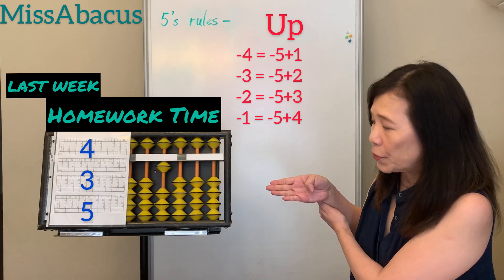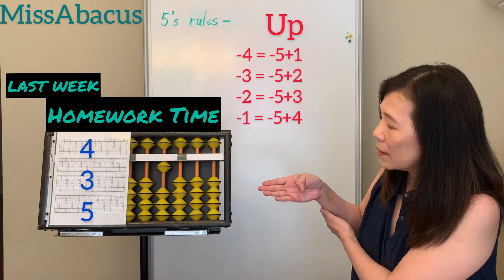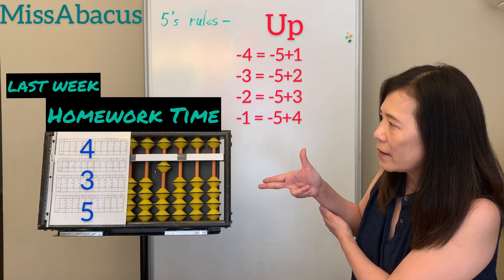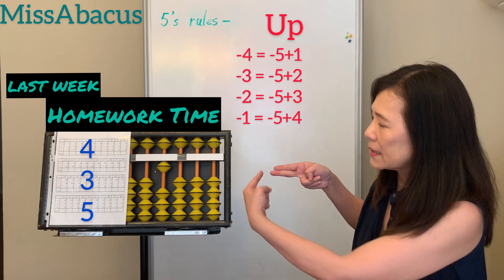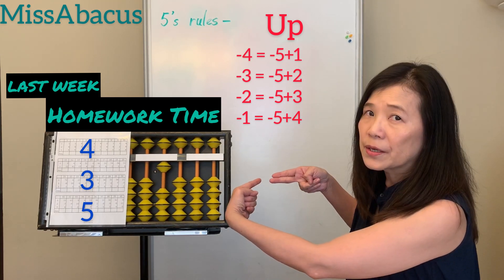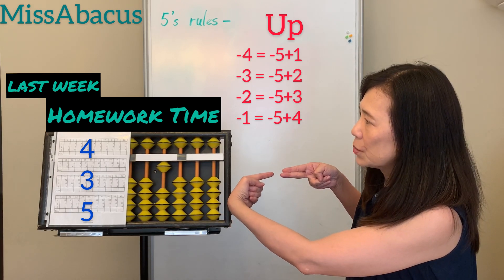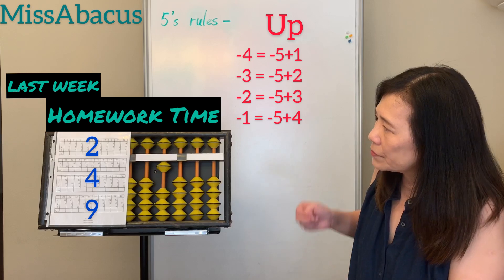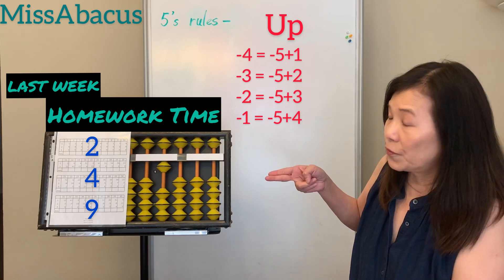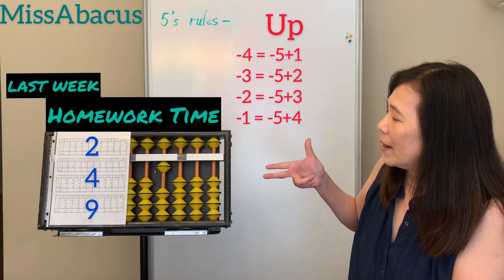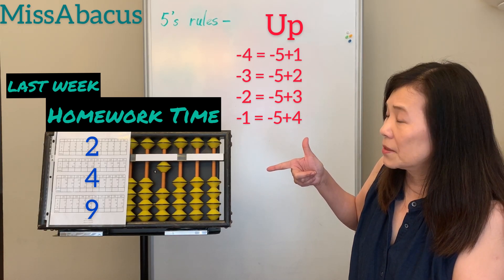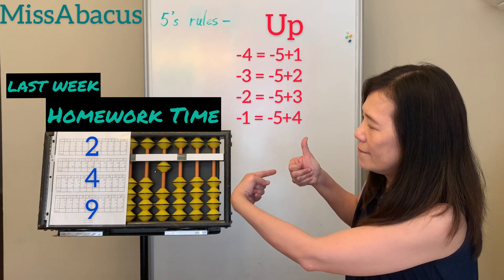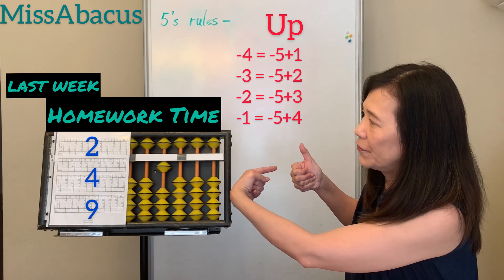Number 6: 4 plus 3 — 5 minus 2, that's 3. Then plus 5: minus 5, plus 10. Answer: 12. Number 7: 2 plus 4 — 5 minus 1 is 4. Then plus 9: minus 1, plus 10. Answer: 15.